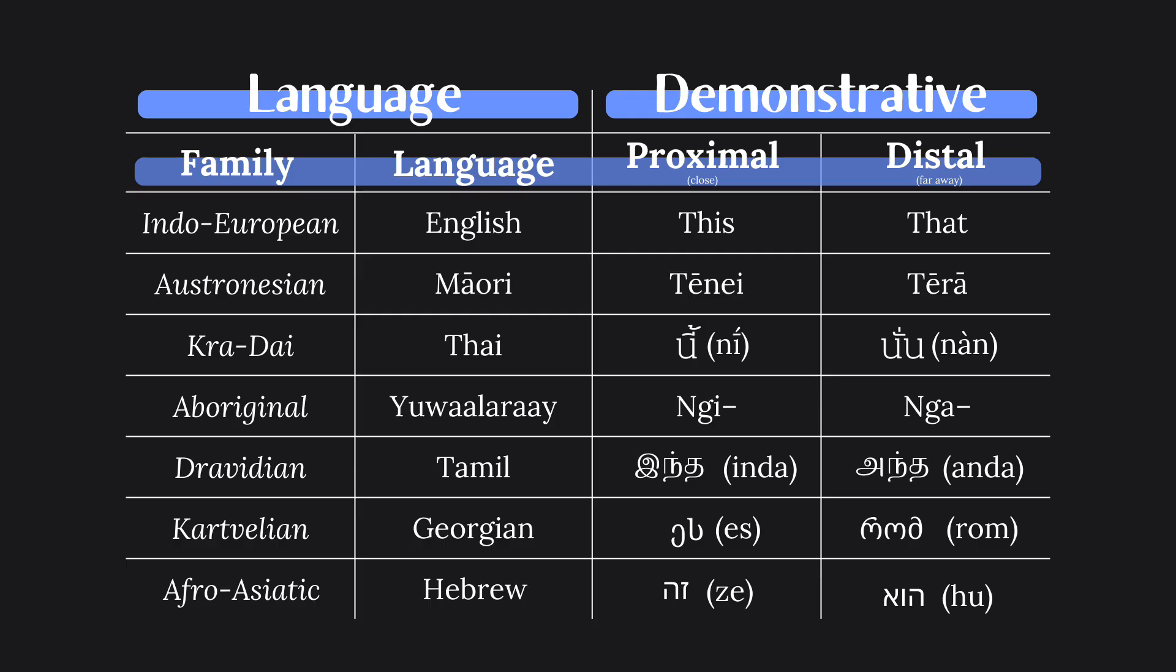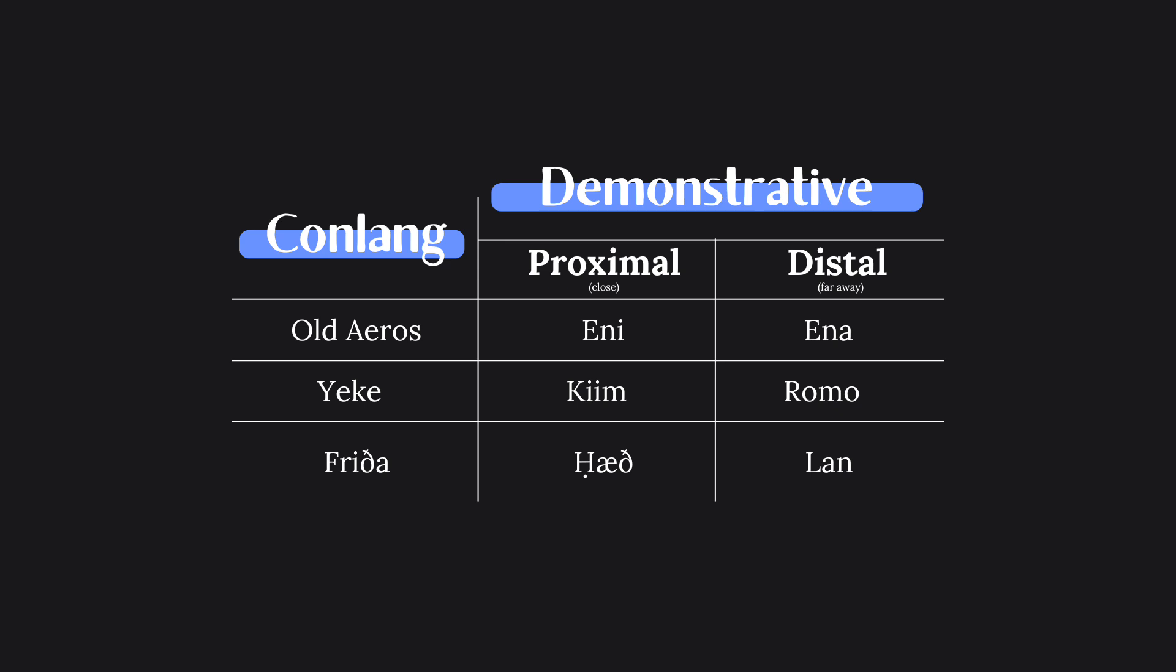Obviously, this doesn't happen in every language, but I noticed it in a suspicious number of them. What really shocked me was when I looked through my conlangs, which are the languages I've made, almost all of which are isolates, meaning I wouldn't have taken words from pre-existing languages. Incredibly, quite a lot of them followed this pattern. In old idos, eni vs ena, in yeke, keem vs romo, and in fritha, heid vs lan.